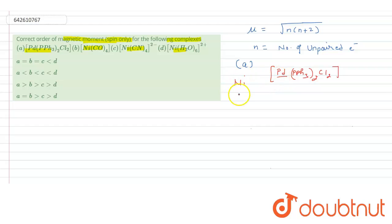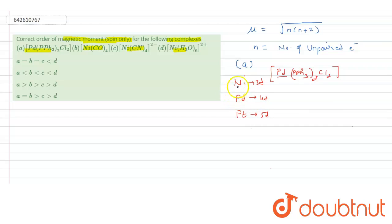This group goes nickel, palladium, platinum — 3d series, 4d series, and 5d series respectively. As we move down the group, the effective nuclear charge increases, and due to this the tendency to form square planar complexes also increases. So this complex is a square planar complex.